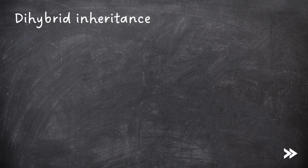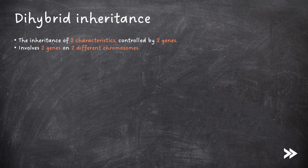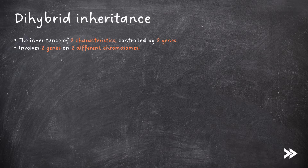So, that was monohybrid inheritance. We now also need to be able to predict the outcomes of dihybrid crosses. Dihybrid inheritance is the inheritance of two characteristics controlled by two genes. Dihybrid inheritance involves two genes on two different chromosomes. When predicting the outcomes of dihybrid crosses, we work by similar principles to monohybrid crosses, but because we have two genes involved it makes the whole process a bit more tedious.